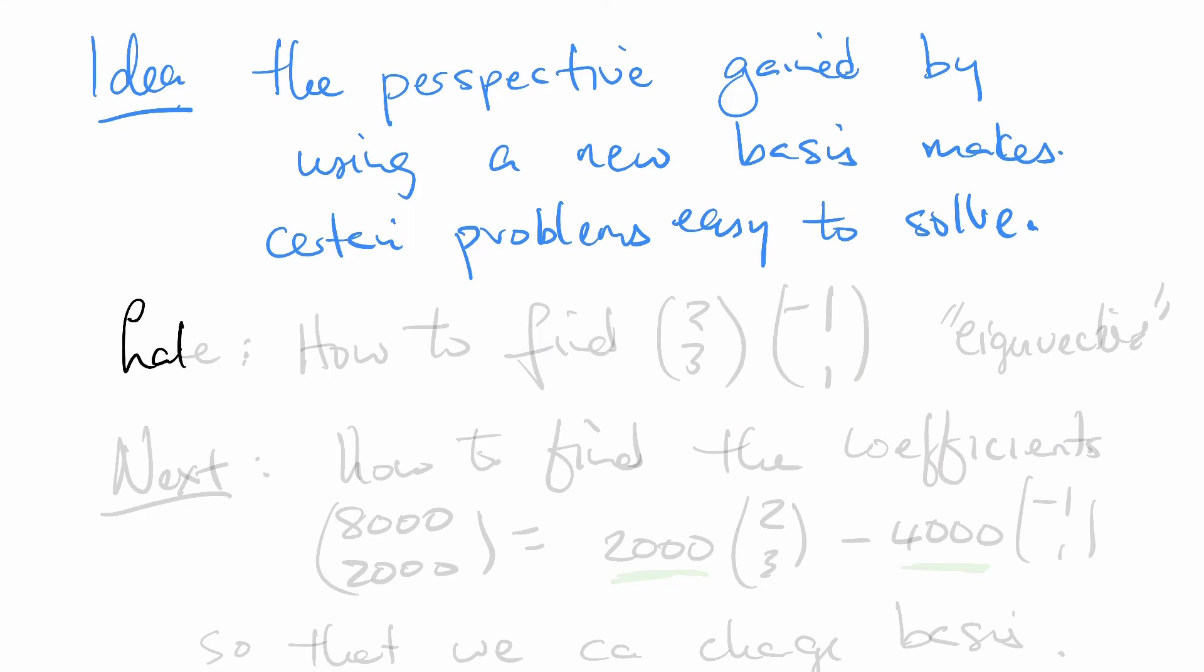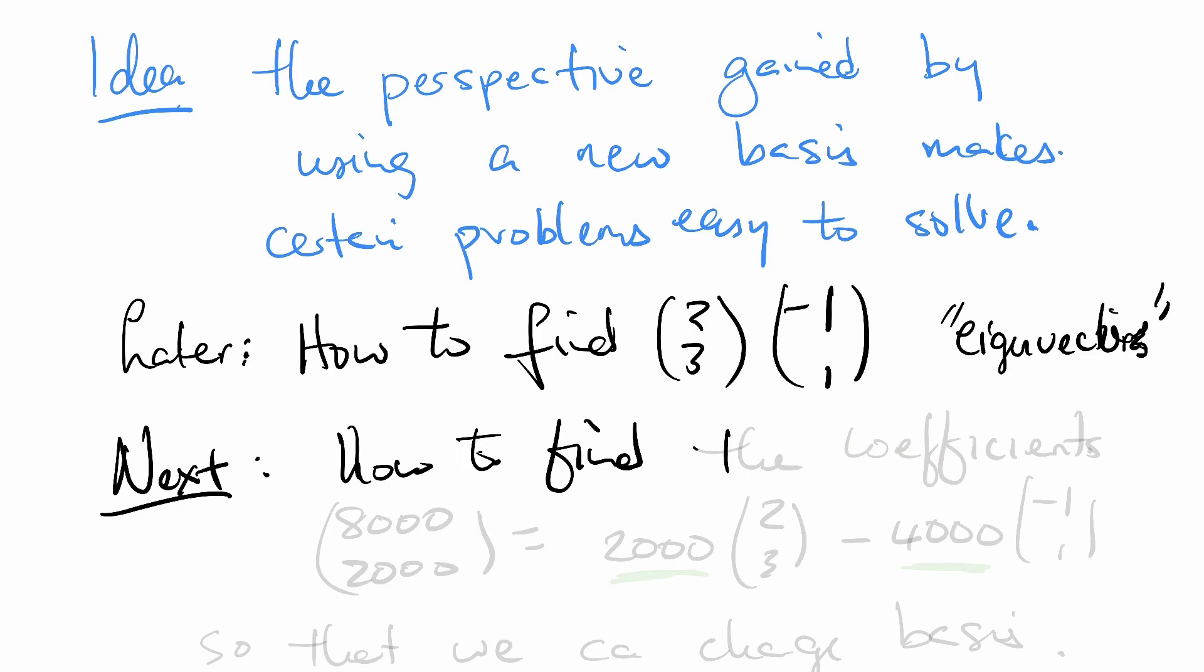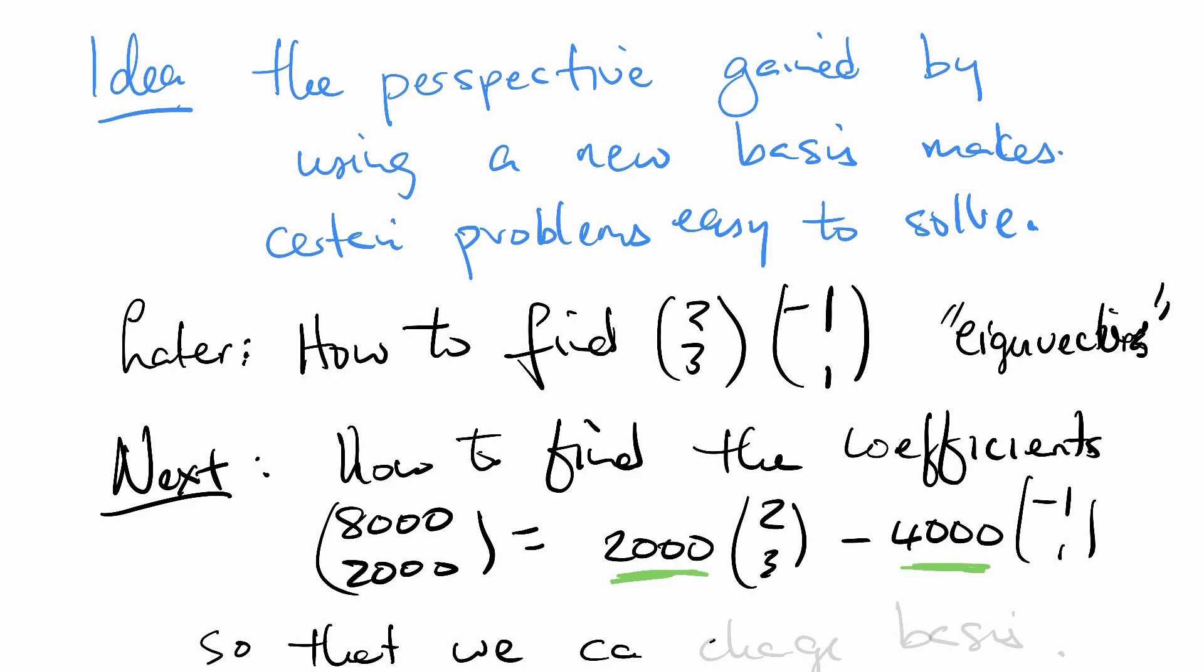So, here's what we're going to do later. Later, we're going to talk about how to find the vectors that we used (2,3) and (-1,1). These are called eigenvectors. Next, we're going to talk about how to find the coefficients - 2,000 times (2,3) minus 4,000 times (-1,1). We're going to talk about how to find these coefficients 2,000 and 4,000 so that we can change basis. Think on this. See you next time.